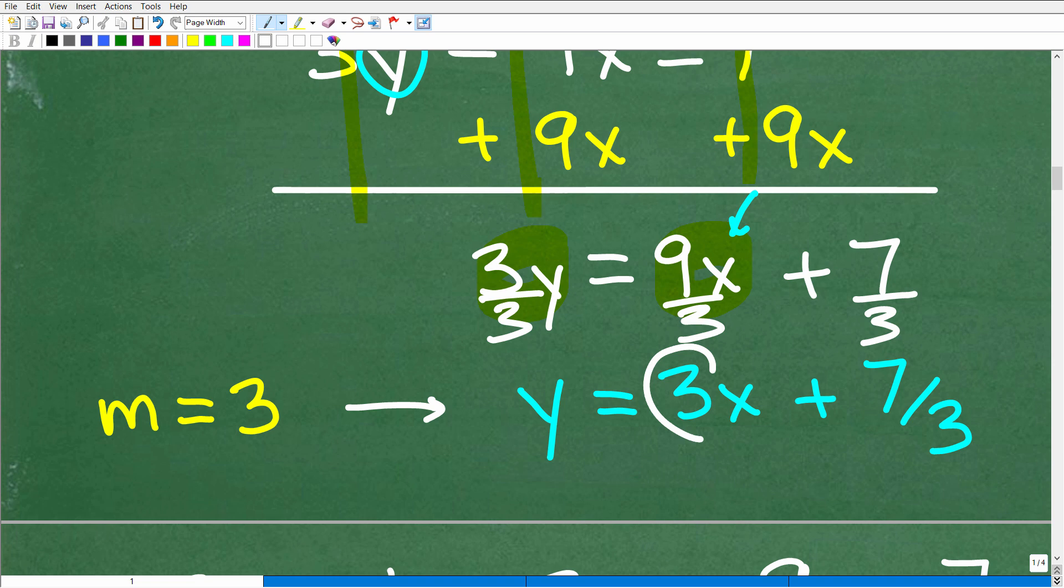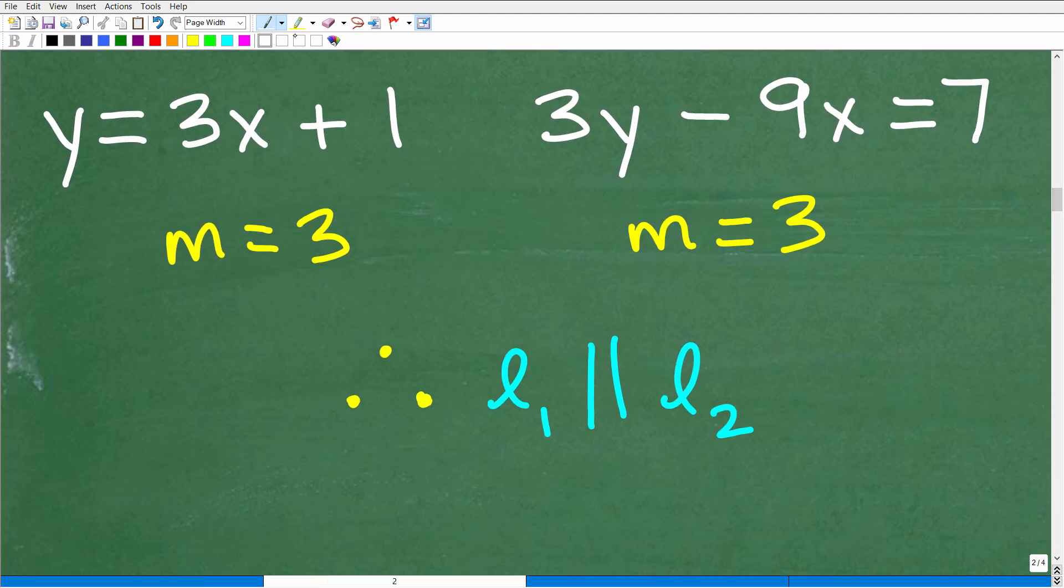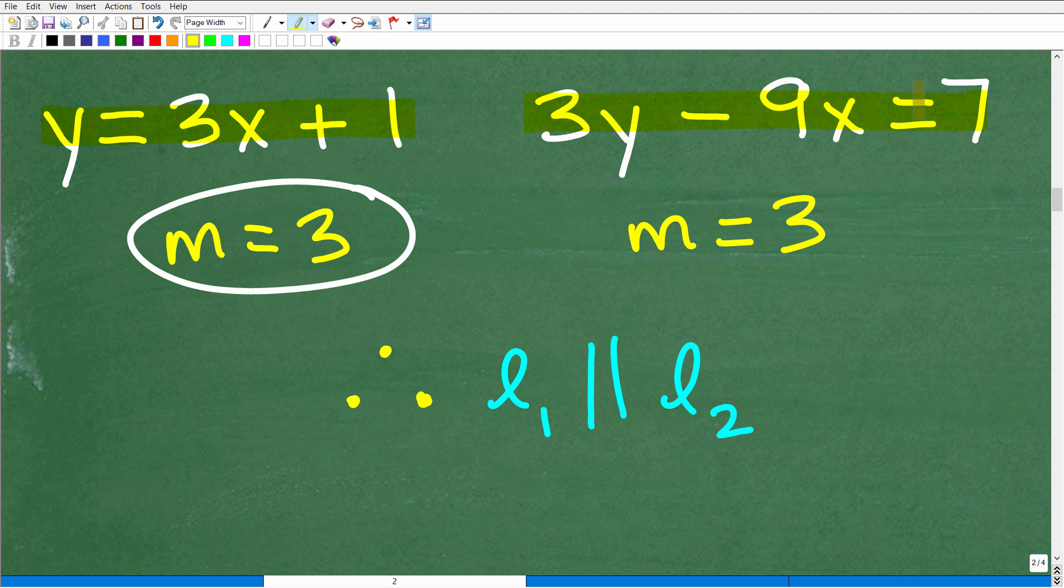So this number here, 3, is the slope of this line. So its slope is 3. So let's go back to what we have here. So our first linear equation that we looked at, its slope is 3. And our second linear equation, we had to fix up. We had to solve for y and put this into slope intercept form. But when we did that, we saw that its slope is 3 as well.